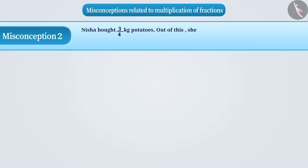Misconception 2. Nisha bought 3 fourth kg potatoes. Out of this, she used 3 fifth portion to cook vegetables. Find out how many kilograms of potatoes have been used.